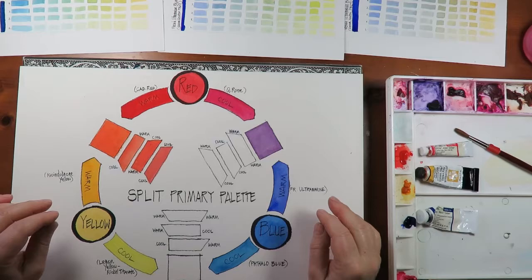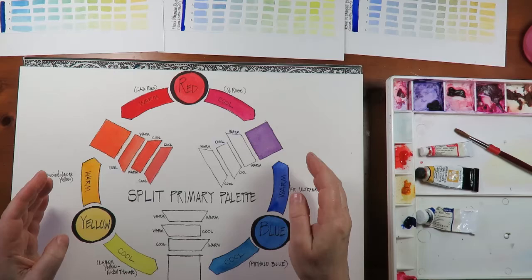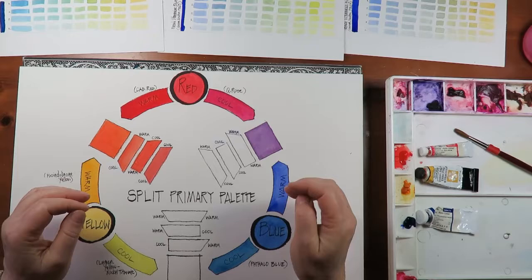Our split primary palette is going to help us mix pairs of paint so we can control not only that hue, the color, but also it shows us how we can control the saturation. That's the clear colors out here and then the grayed out colors.